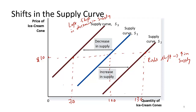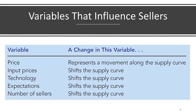This happens for reasons other than the change in price of the good under consideration — in this case, the ice cream cone. The variables that influence sellers include: the price (which causes movement along the supply curve), input prices (a shift), technology (a shift of the supply curve), expectations (a shift), and number of sellers (also a shift).